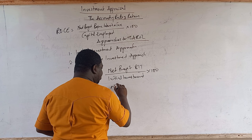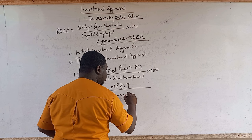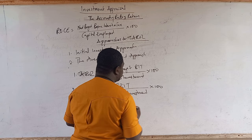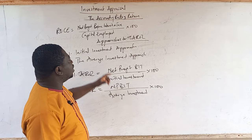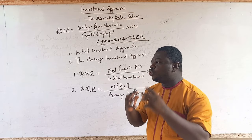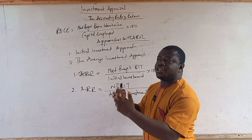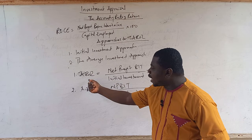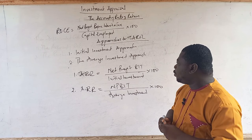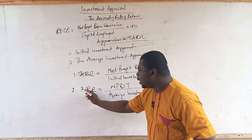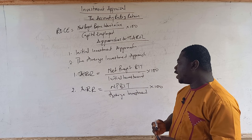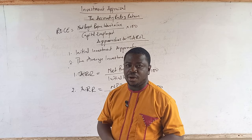Using your accounting rate of return, you can determine whether the project will be profitable or not and decide whether to accept or reject it. The accounting rate of return based on the initial investment approach is net profit before interest and tax over initial investment times 100. The average investment approach uses net profit over average investment times 100. The formulas are the same but the denominators are different.